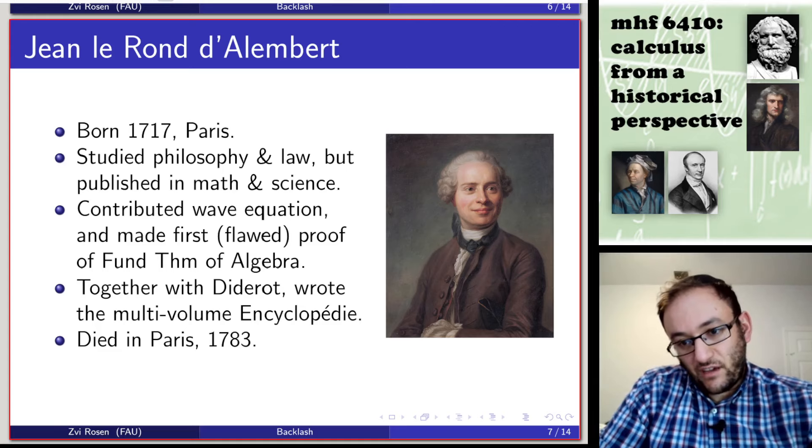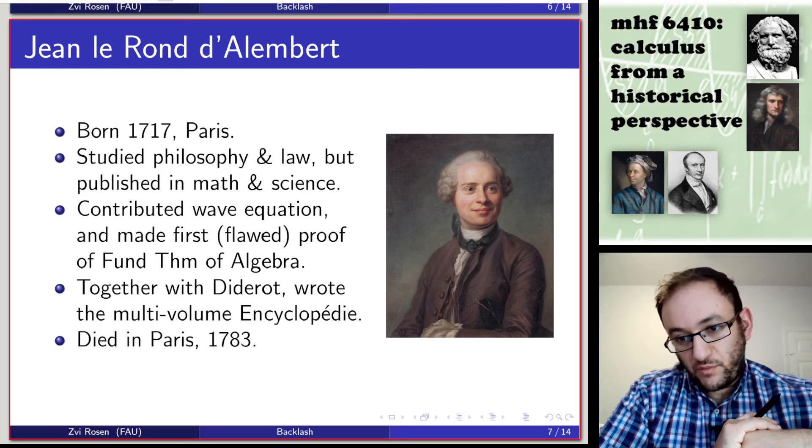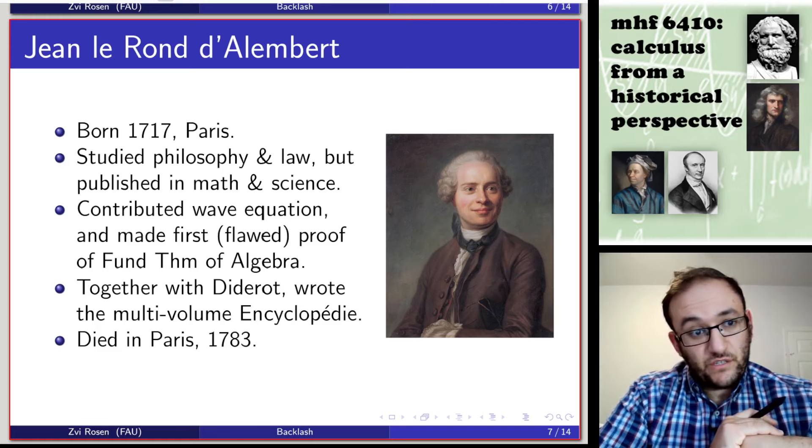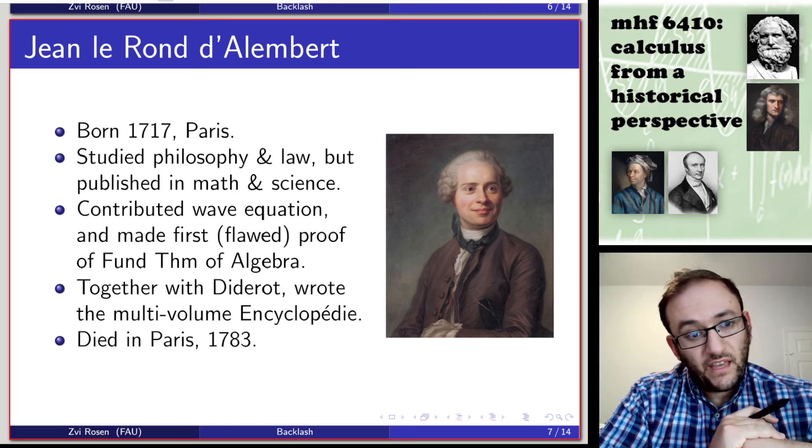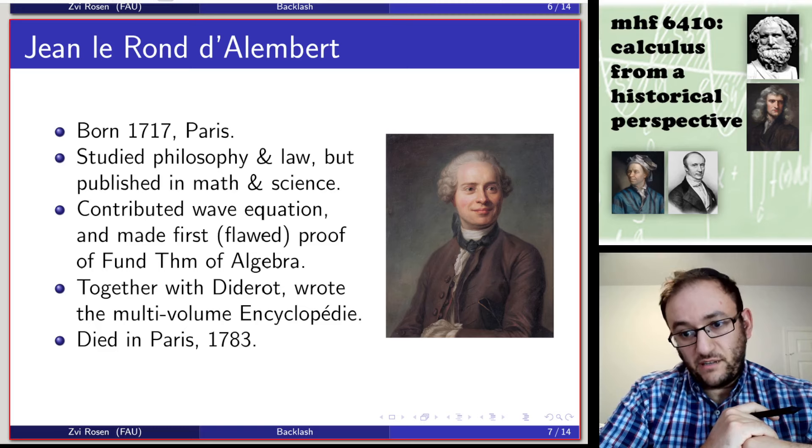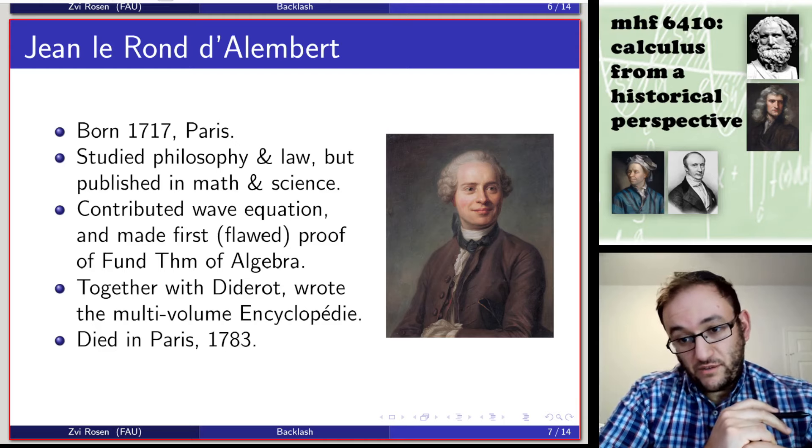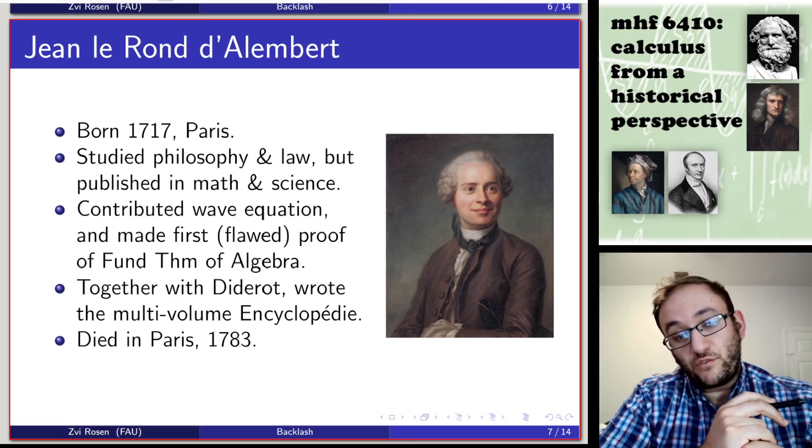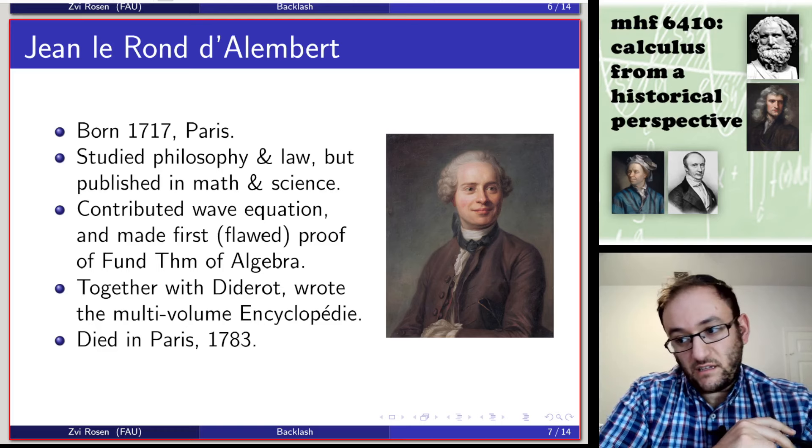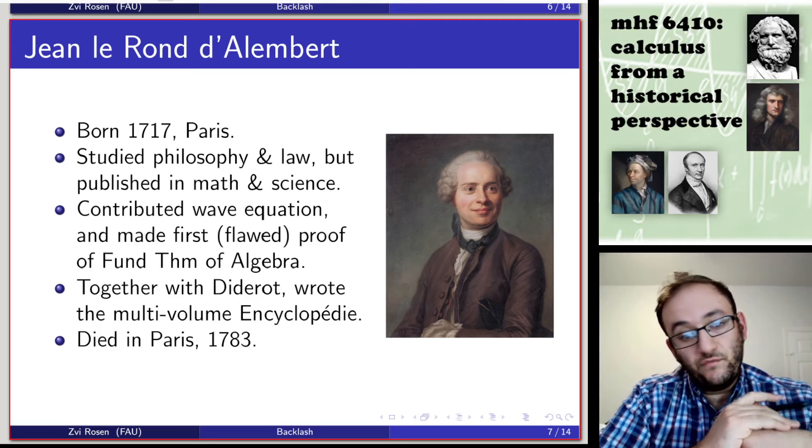So Berkeley had laid down the gauntlet and said we have a problem with the calculus. Things aren't well defined, it's not built up rigorously. And so people needed to step up and try to answer that. The first one to do this in a serious way was Jean Laurent d'Alembert. He was a very important mathematician. He was born in 1717 in Paris. He studied philosophy and law, but also ended up publishing in math and science. He contributed the wave equation, which is sometimes known as d'Alembert's wave equation. He also made the first proof of the fundamental theorem of algebra, though there was a fundamental flaw that made it incorrect. Gauss was the first to publish a completely widely accepted proof of the fundamental theorem.